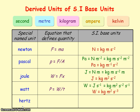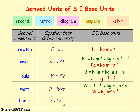Hertz is the unit of frequency, and frequency equals one divided by the time period. So hertz is equal to one divided by the units of time — seconds — meaning a hertz is equal to one per second, or s⁻¹.